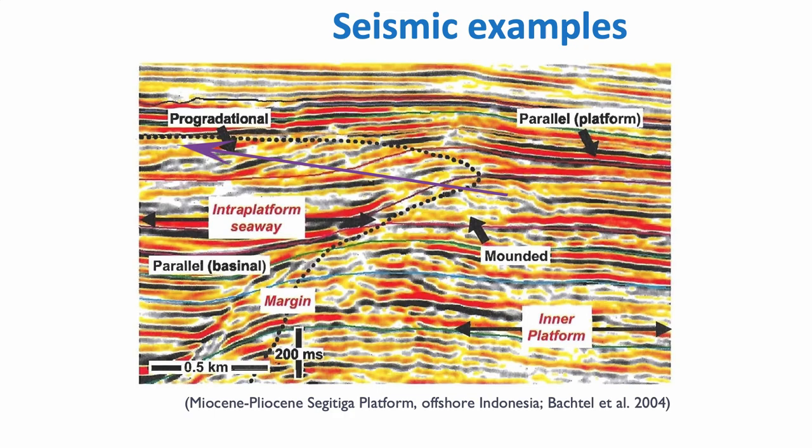The problem with carbonates — and actually with clastics as well — is that what we see in terms of the trajectory of the reef track is a function of two things: it's a function of base level change, so sea level rise and sea level fall, but it's also a function of localized production of carbonate sediments. So you cannot really separate these two things.